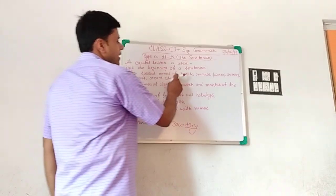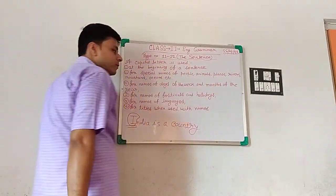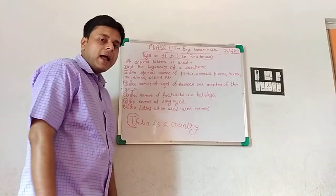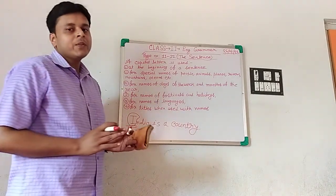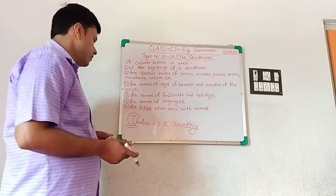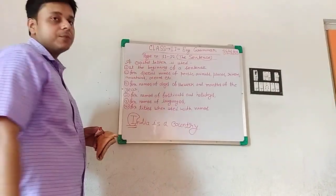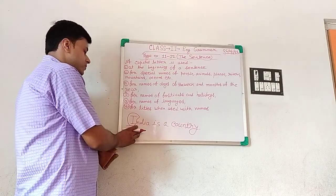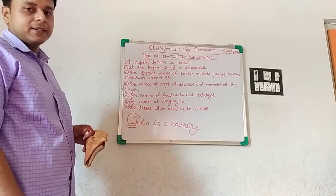The second point: capital letters are used for special names of people, animals, places, rivers, mountains, and oceans. A special name refers to any specific name, and a common name refers to a general name. India is a special name because it refers to a specific country, so we use 'I' in capital letters.